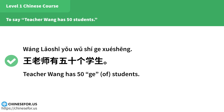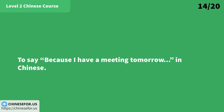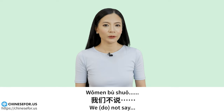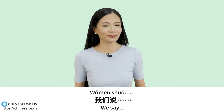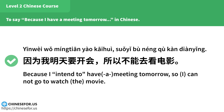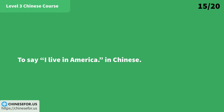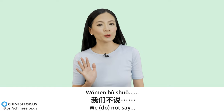To say "because I have a meeting tomorrow" in Chinese: 我们不说「因为我明天要开会，所以不能去看电影」（with incorrect structure），我们说「因为我明天要开会，所以不能去看电影」。